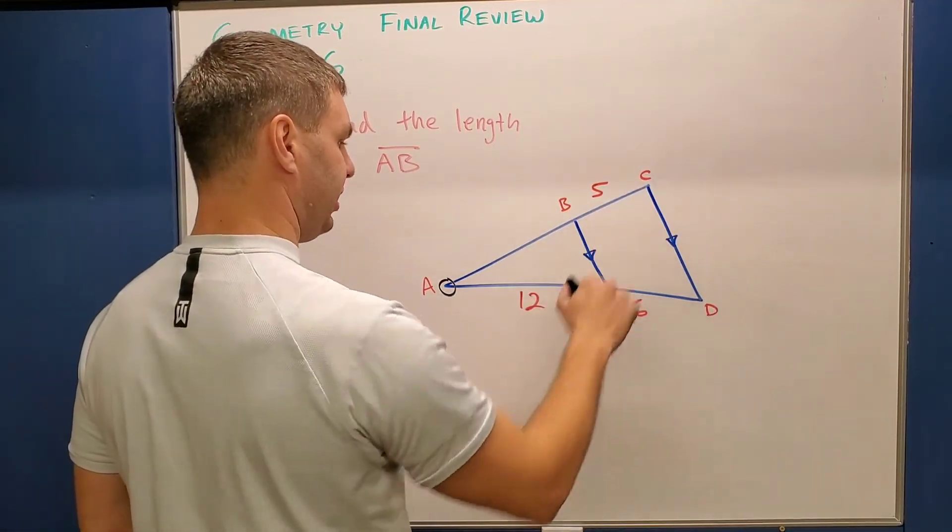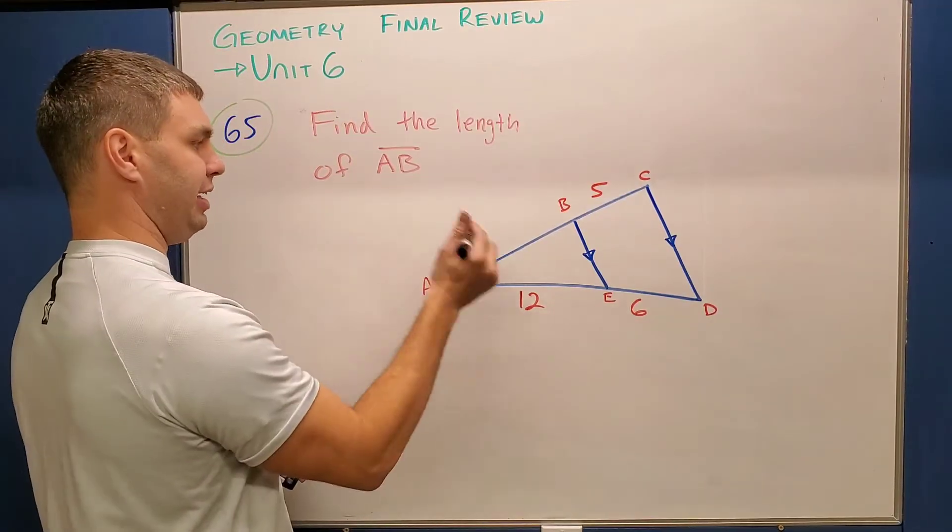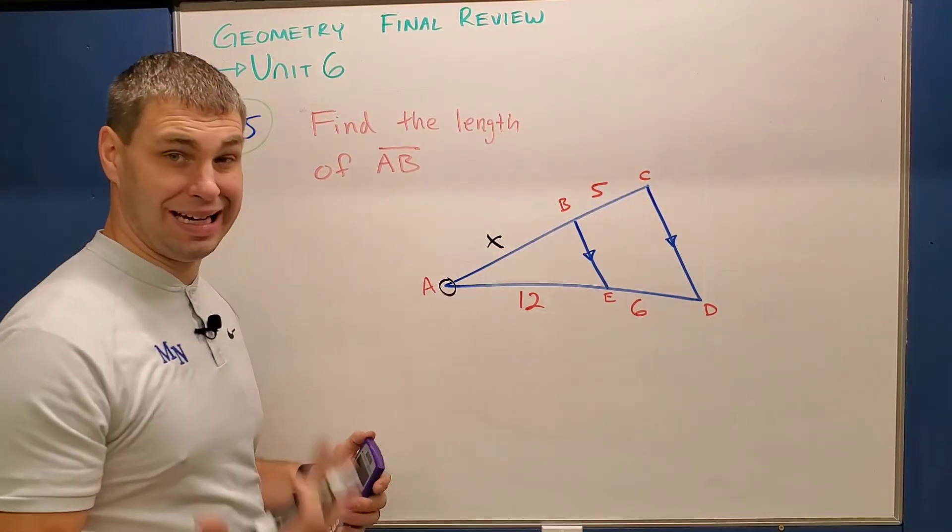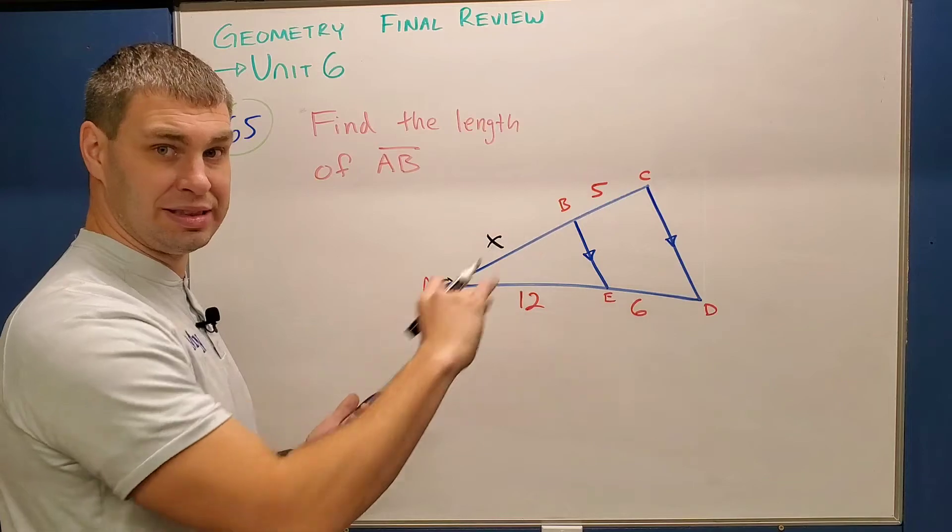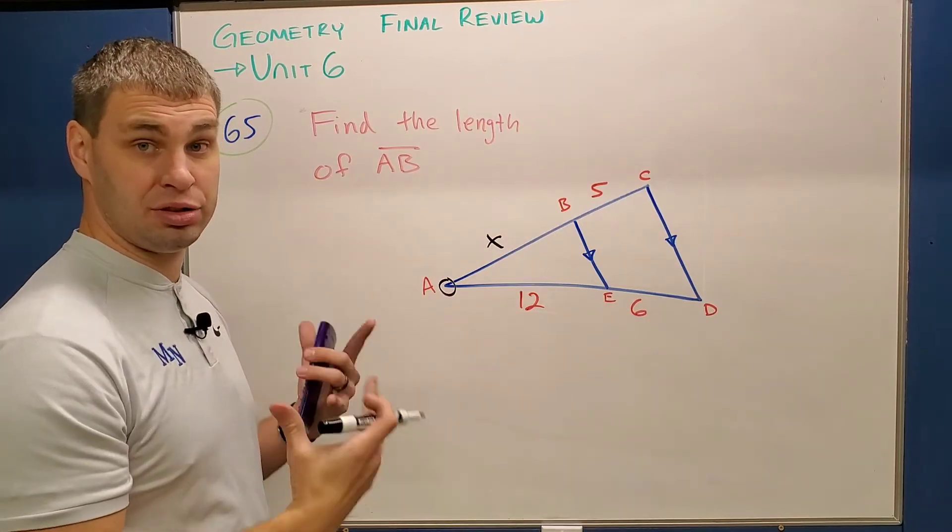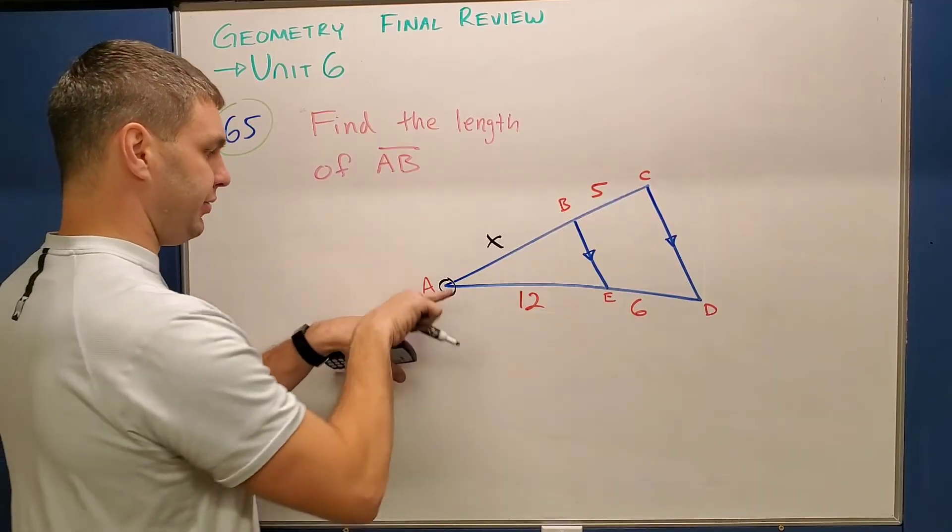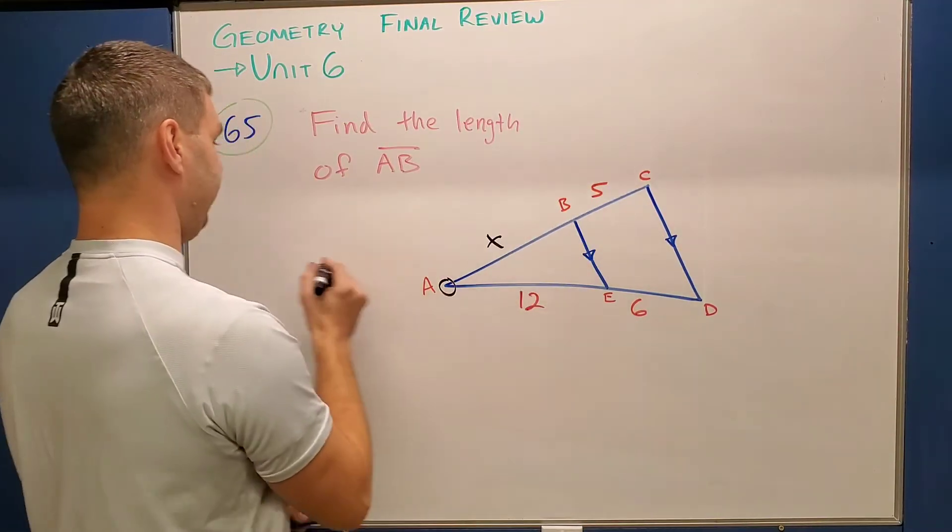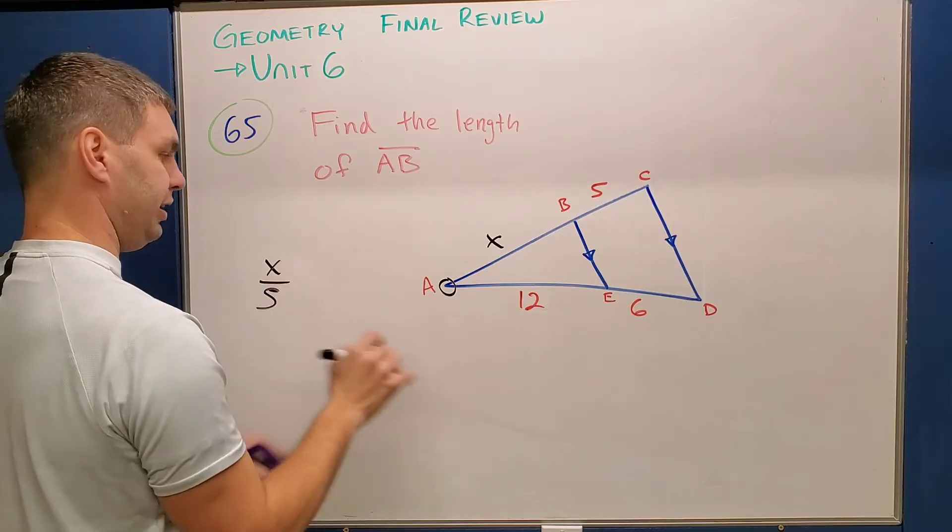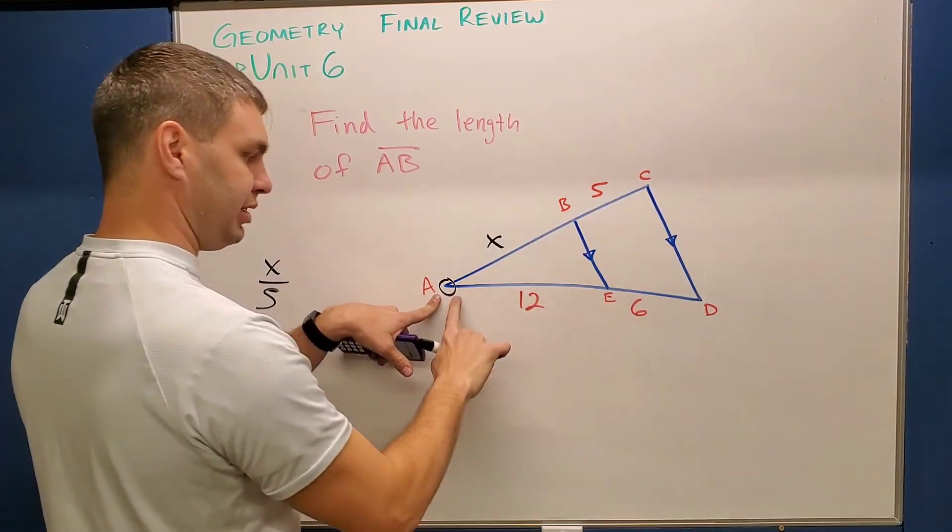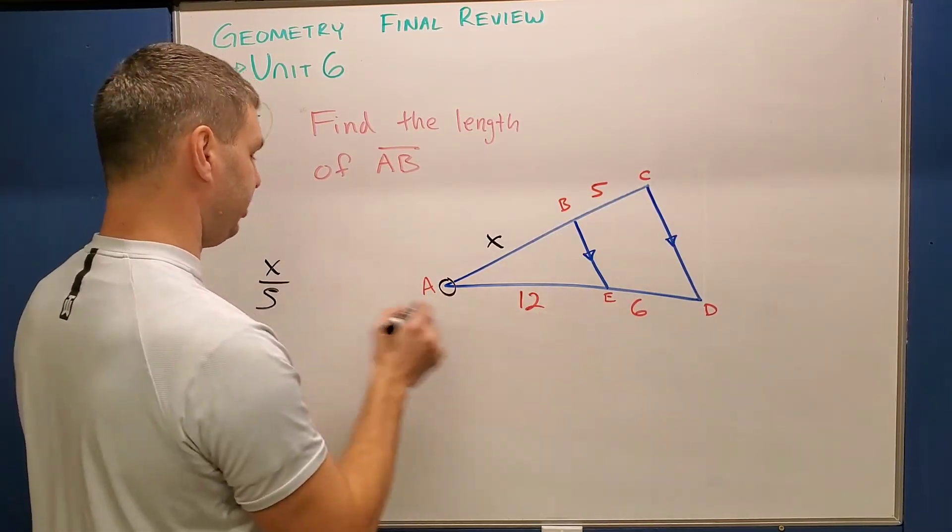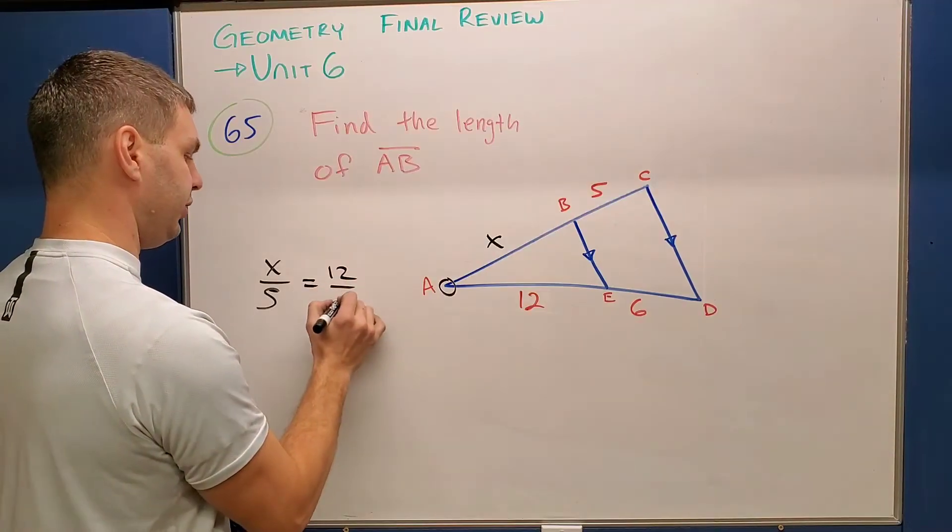So for example, I have information along this side and this side. Again, I'm trying to find AB, so AB I'll call maybe x, and then you just run down one side and run down the other and set those as your two fractions for your proportion. What I mean by that is if I run down the top side, I have x over 5. And then same thing, if I run down the bottom side, all based off this point, I'm going to have 12 over 6. So equals 12 over 6.